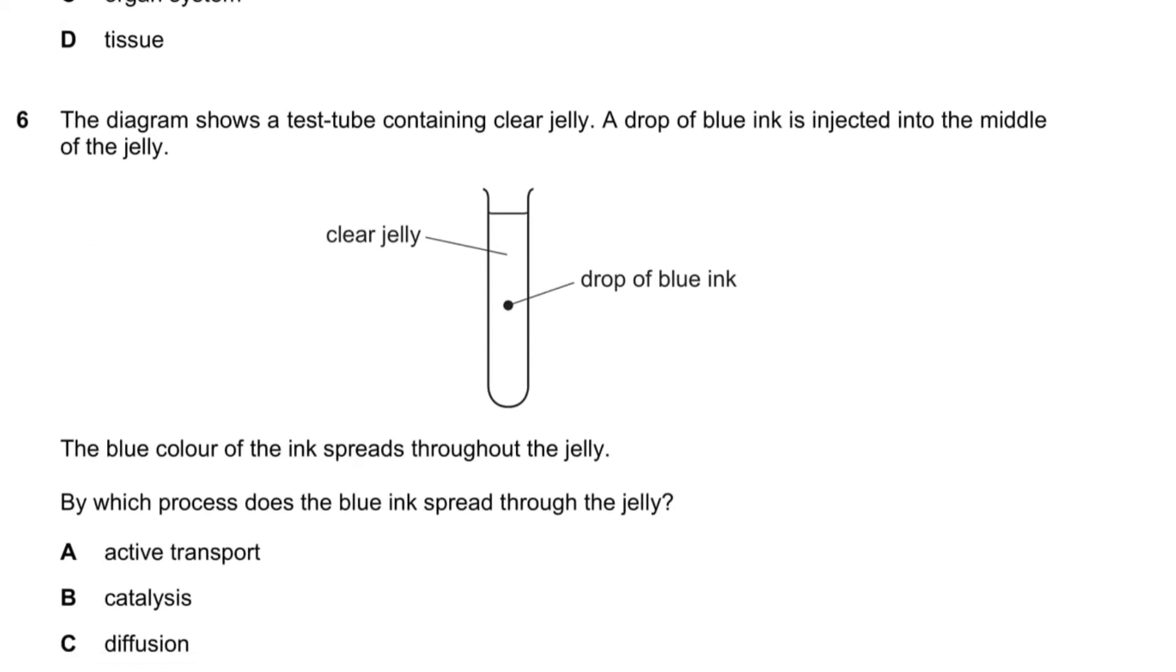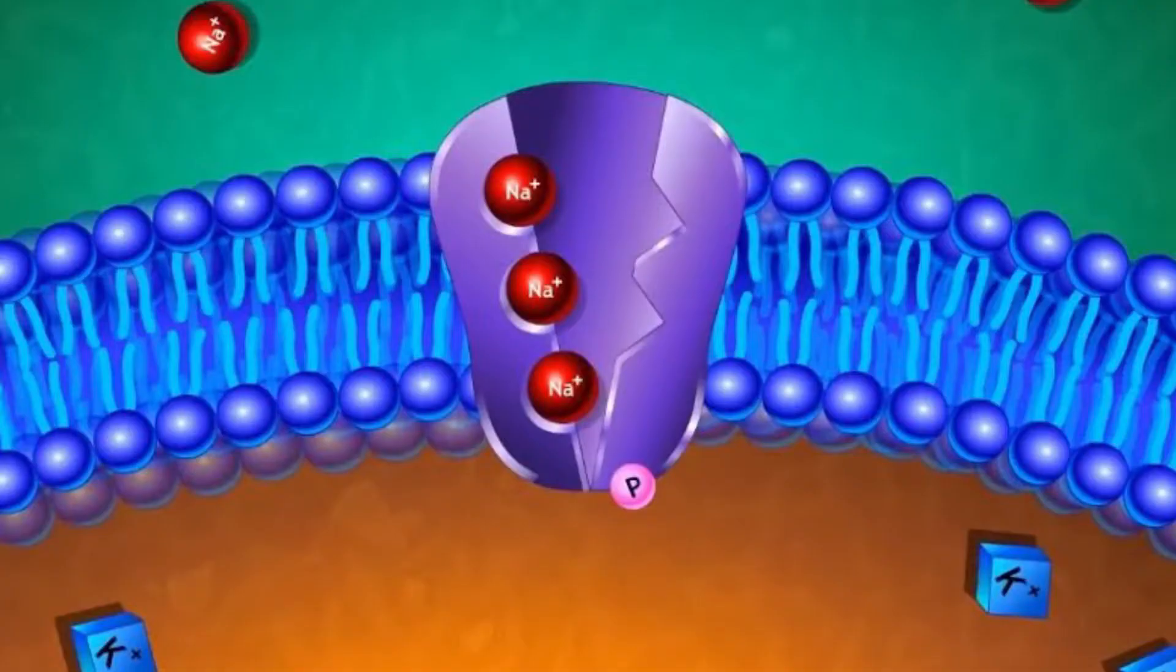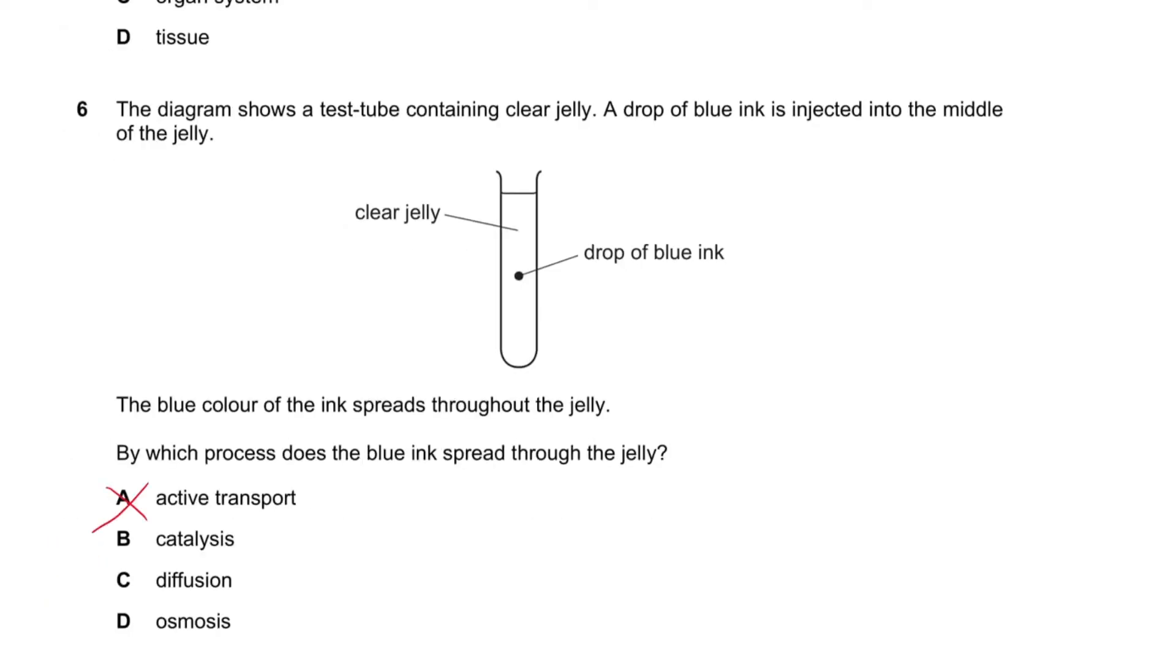Question number six says the diagram shows a tissue containing clear jello. A drop of blue ink is injected into the middle of the jelly. The blue color in the ink spreads through the jelly. It's not active transport because there's no transport protein or nothing like that. It's not osmosis because there's no partially permeable membranes. It's diffusion.